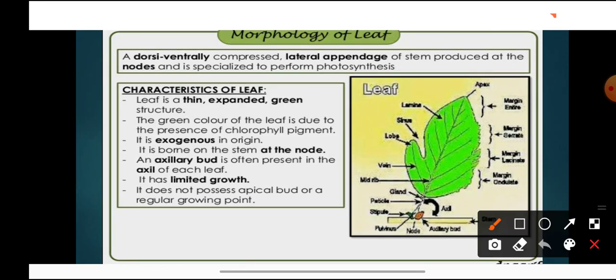What are the various characteristics of leaf? A leaf is a thin, expanded green structure. The green color of the leaf is due to the presence of chlorophyll pigment. Leaf's origin is exogenous — like the stem's branches, they are exogenous in origin. Similarly, the leaf present at the node is also exogenous in origin. When a branch arises from the outer parts of the stem — from the cortex area — that is known as exogenous.